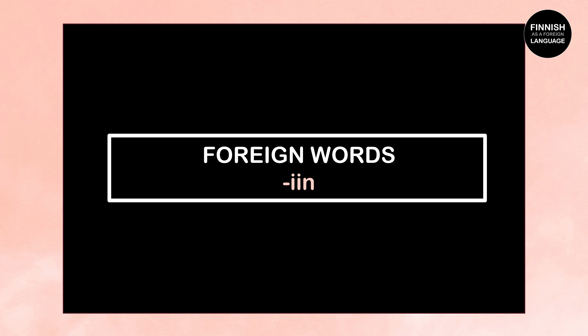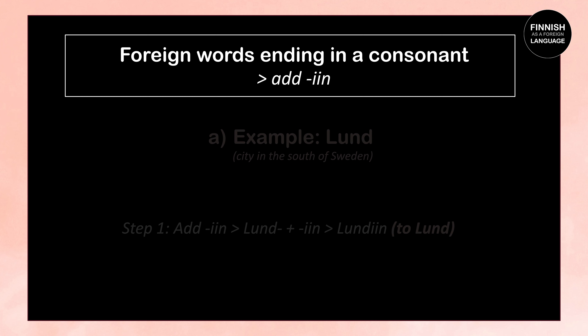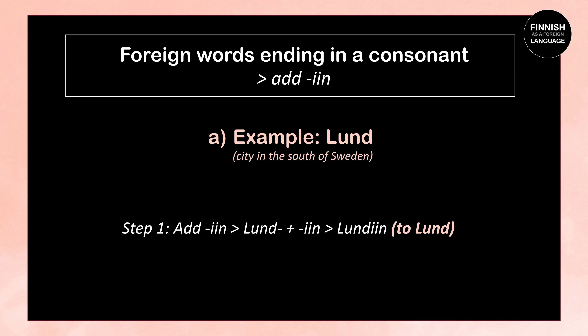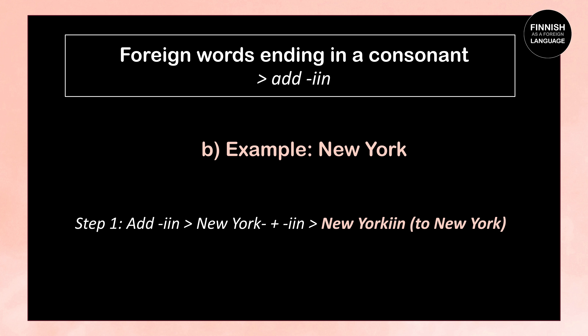Now how to form the illative with foreign words. When we have a foreign word ending in a consonant, we add the ending -in. For example: Lund, a city in southern Sweden — we add -in: Lund + in = Lundin. Another example: New York — we add -in to the second word: New York + in = New Yorkin, which means to New York.